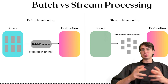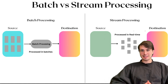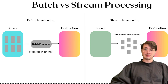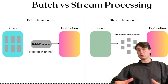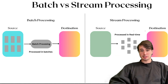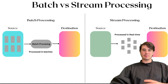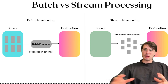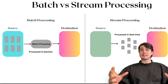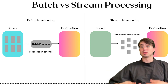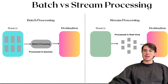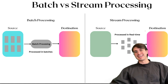An example response: batch pipelines process data in large chunks, making them simpler to build and more suitable for use cases like nightly ETL jobs or historical reporting; however, they don't provide real-time insights. Streaming pipelines process data continuously with low latency, ideal for real-time dashboards or event-driven architectures, but they're more complex and resource-intensive. This showcases your all-around understanding of both processes and their use cases in modern data engineering.